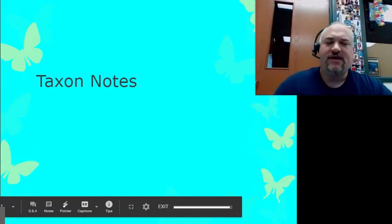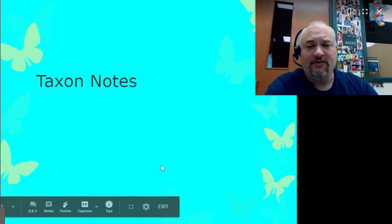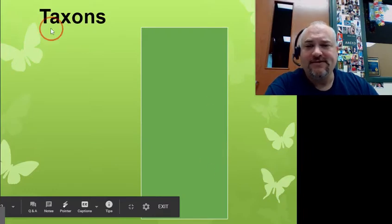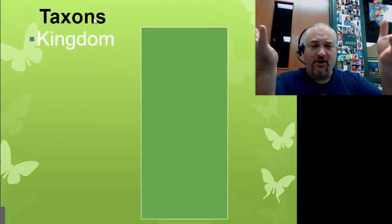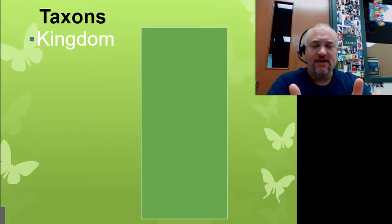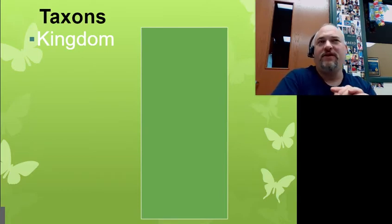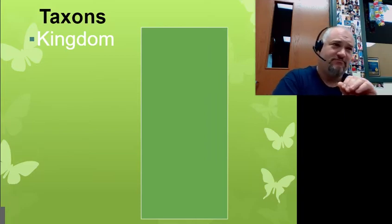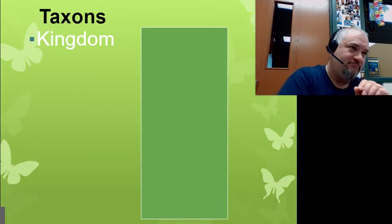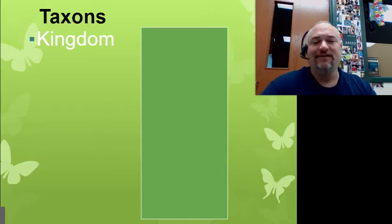This next section of the notes on taxonomy deals with taxons themselves — the different grouping levels. Taxons are the different levels of grouping, just like we learned in the last section about birds: the big group was birds, then the smaller group waterfowl, then ducks. Taxons are the names we give to those groups. The really big group is birds, the big group is waterfowl, the medium group is ducks, and the small group is mallards — huge, large, medium, and small would be the different names of the taxons.